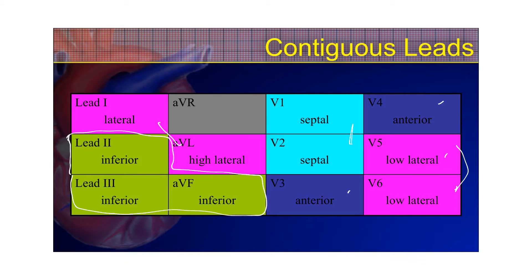In the precordial leads, V2 and V3 are contiguous, as well as V4 and V5. This makes sense because the precordial electrodes placed on the chest are close to one another and look at a very close portion of the heart. What we're trying to identify here are the different areas of the heart affected by ischemia, injury, or infarct.